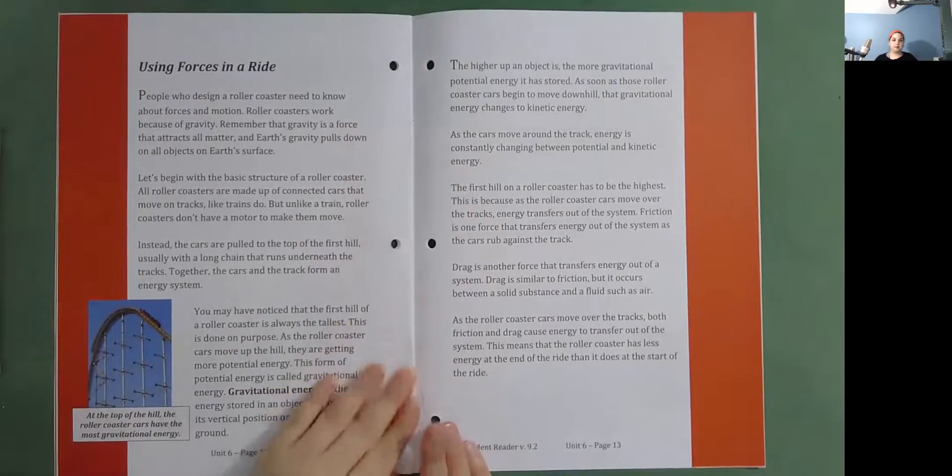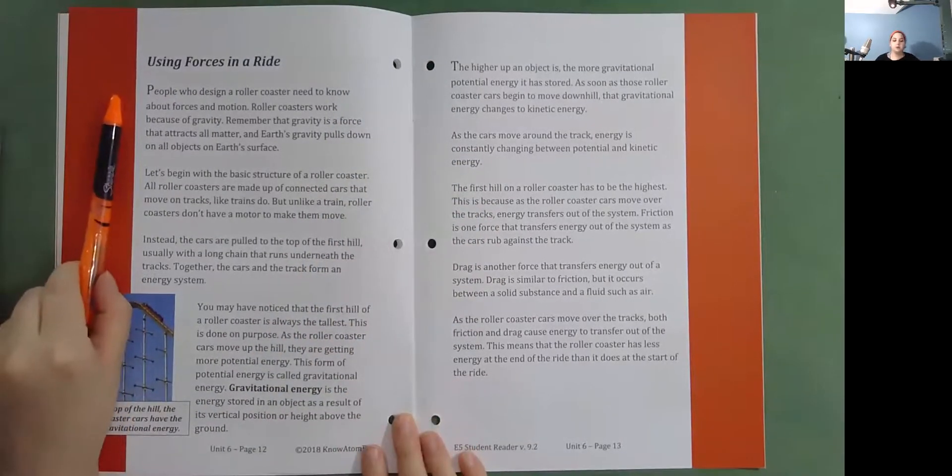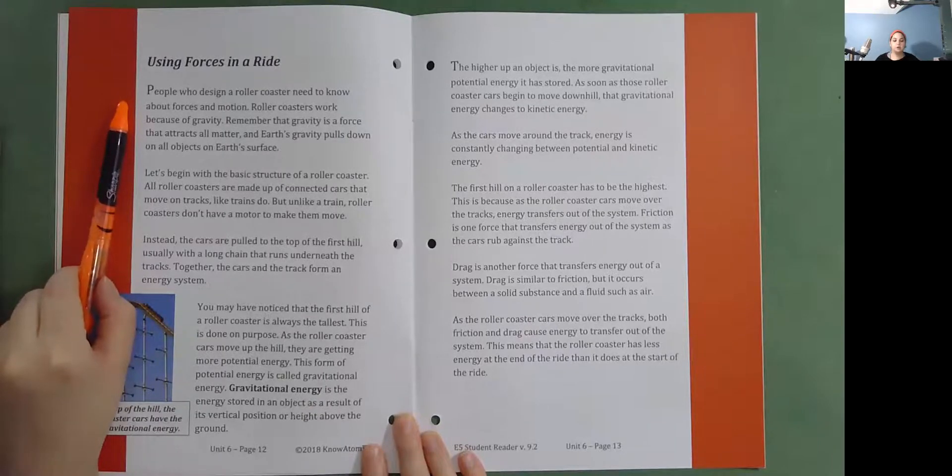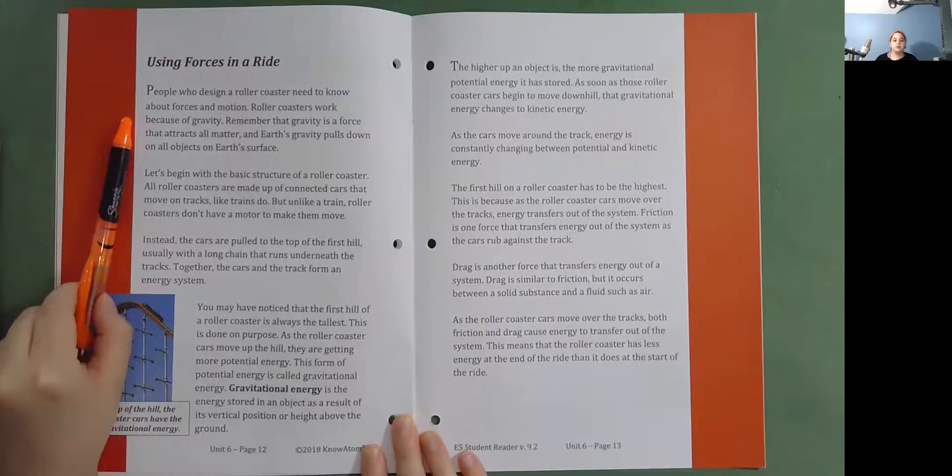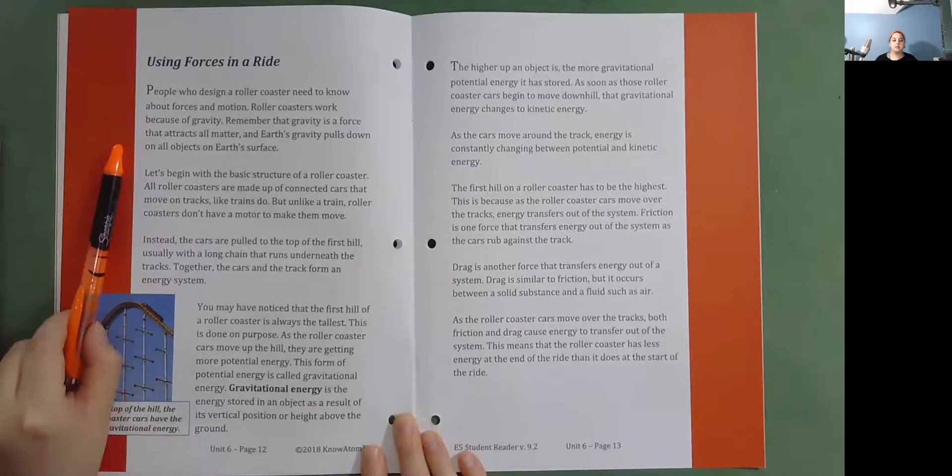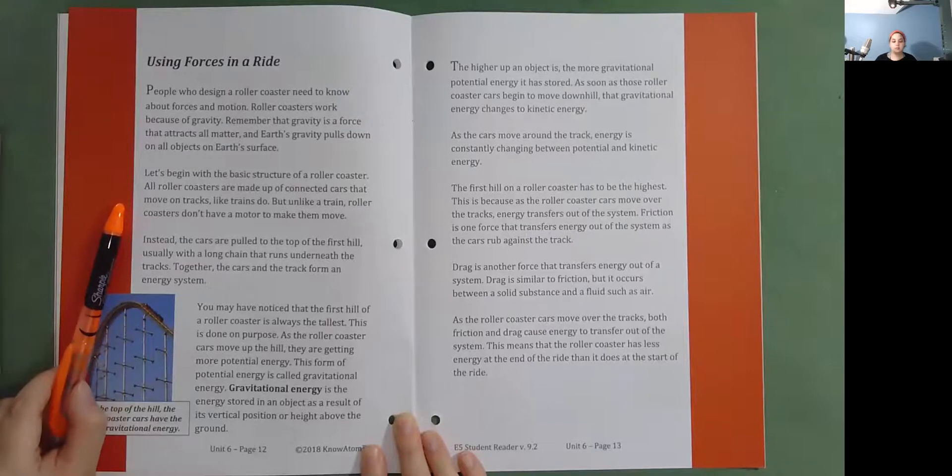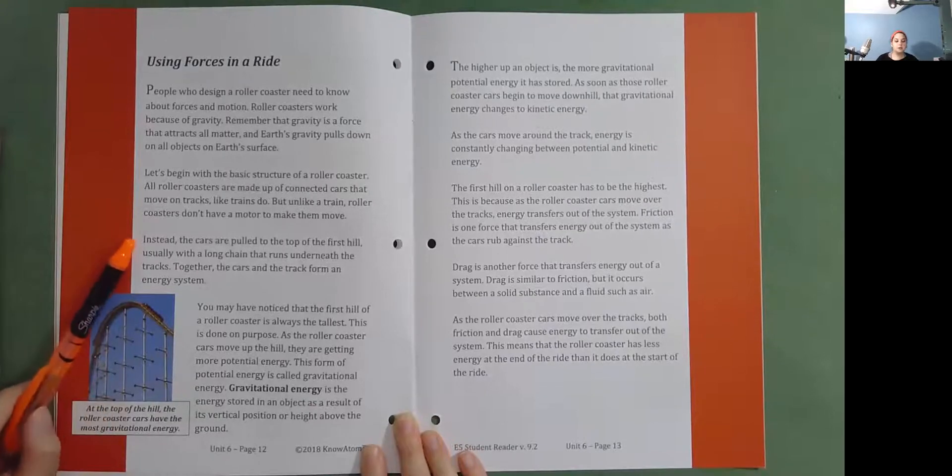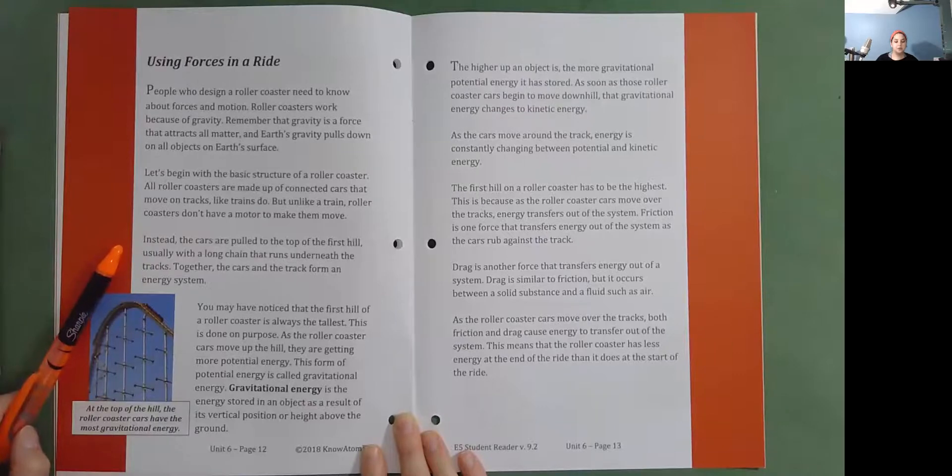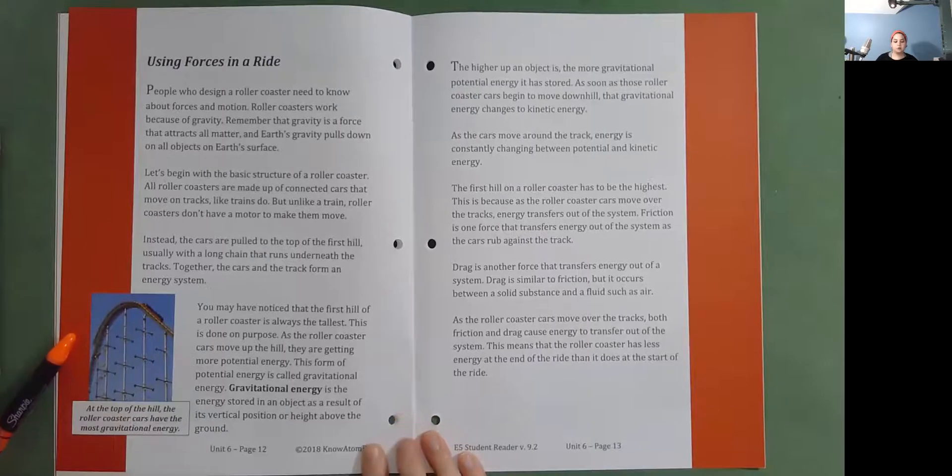Using forces in a ride. People who design a roller coaster need to know about forces and motion. Roller coasters work because of gravity. Remember that gravity is a force that attracts all matter and Earth's gravity pulls down on all objects on Earth's surface. Let's begin with the basic structure of a roller coaster. All roller coasters are made up of connected cars that move on tracks, like trains do. But unlike a train, roller coasters don't have a motor to make them move. Instead, the cars are pulled to the top of the first hill, usually with a long chain that runs underneath the tracks. Together, the cars and the track form an energy system.